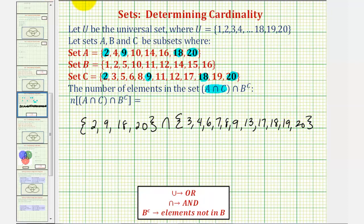And now to find the intersection of these two sets, we want to find the elements that are in this set, and also in this set, meaning the elements they have in common. Notice both of these sets contain nine, eighteen, and twenty.